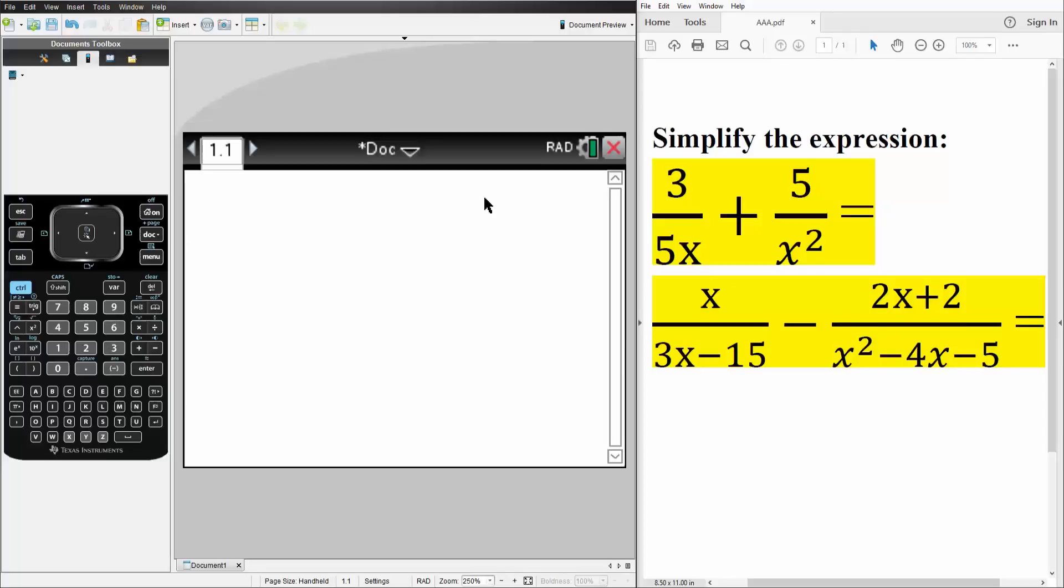We simply write what we have for the first step. So we say 3, ctrl division, we have 5 times x, plus ctrl division, we have 5 divided by x squared.